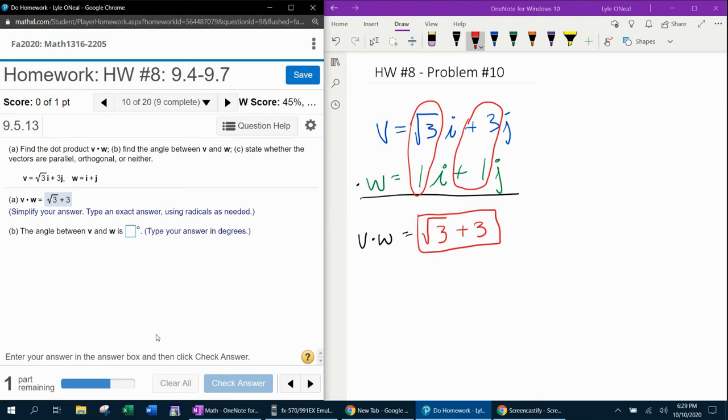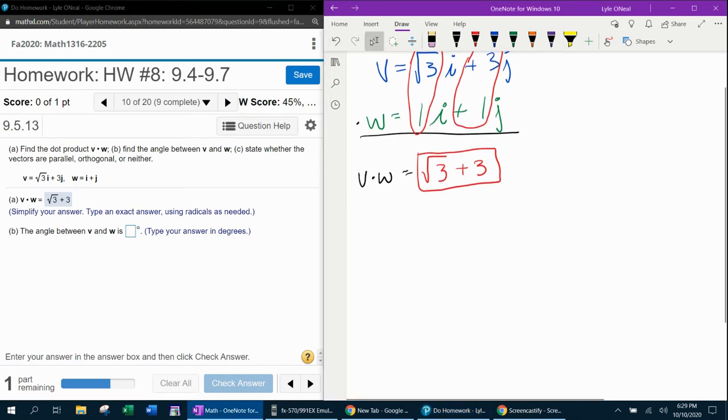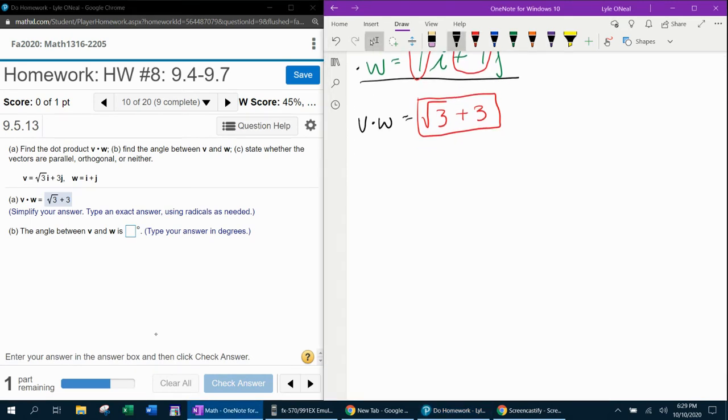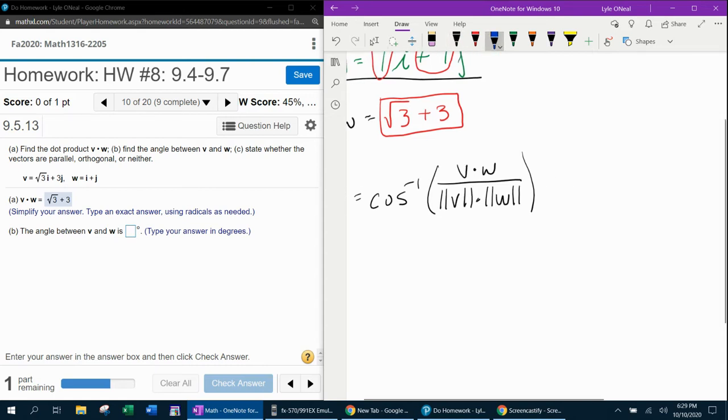Now, to find the angle between the two vectors, we need a formula: theta equals the inverse cosine of the dot product divided by the magnitudes multiplied. I've already got the dot product, so I need the magnitudes.